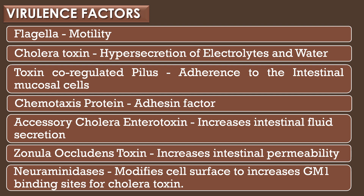The seven virulence factors are: flagella, cholera toxin, toxin co-regulated pilus, chemotaxis protein, accessory cholera enterotoxin, zonula occludens toxin, and neuraminidases. Flagella supports Vibrio cholerae for its motility. Cholera toxin results in hypersecretion of electrolytes and water. Toxin co-regulated pilus helps in adherence to intestinal mucosal cells. Chemotaxis protein acts as an adhesion factor. Accessory cholera enterotoxin increases intestinal fluid secretion. Zonula occludens toxin increases intestinal permeability, and neuraminidases modifies cell surfaces to increase GM1 binding sites for cholera toxin.